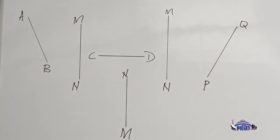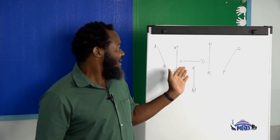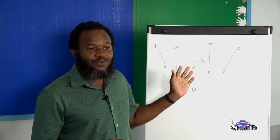I've drawn some lines on the whiteboard. See if you can tell me which of these lines are vertical lines. If you selected the lines labeled MN, then you are absolutely correct.